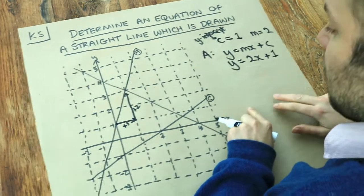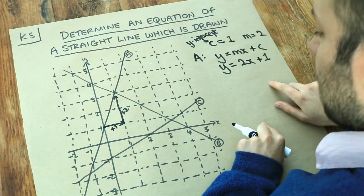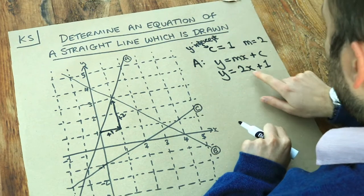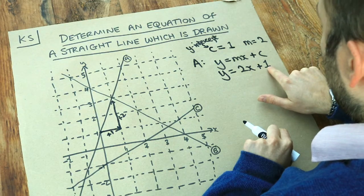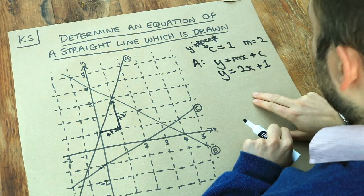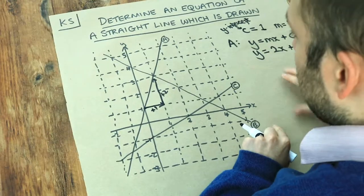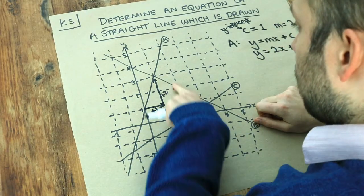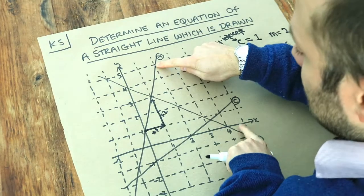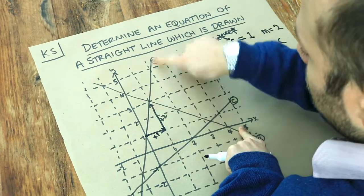And we could always check that. If we just try a different value of x, let's say x was equal to 2, then 2 times 2 plus 1 is 5. And that's basically saying when the x value is 2, the y value should be 5. If we go across 2, 5, indeed we can see 2, 5 is a point on this straight line here.